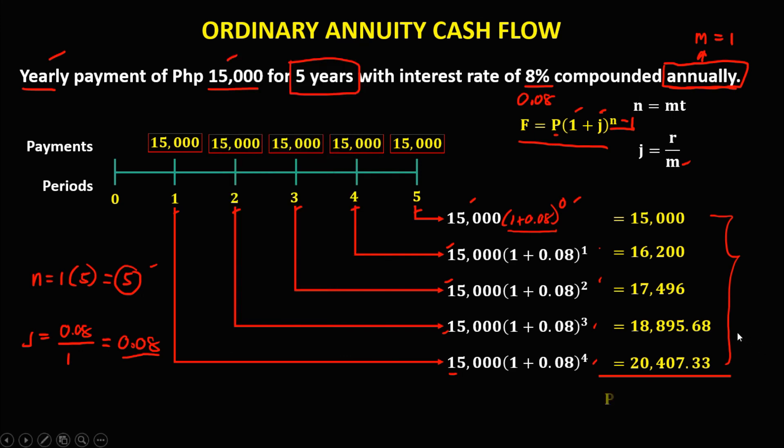So the future value of this ordinary annuity is 87,999.01 pesos. This is the cash flow of this ordinary annuity problem.